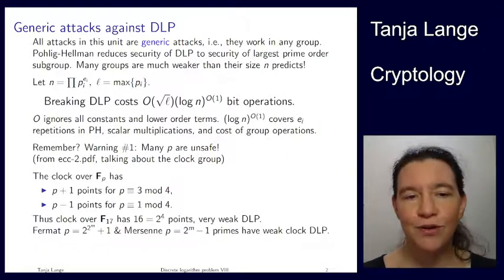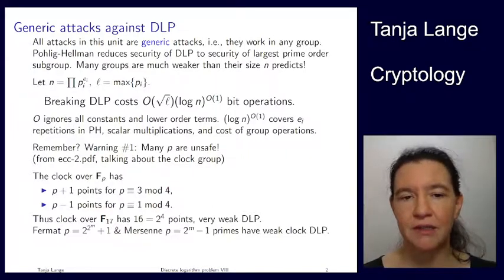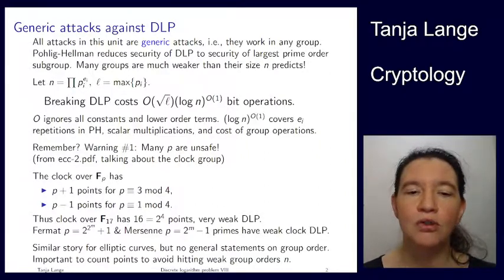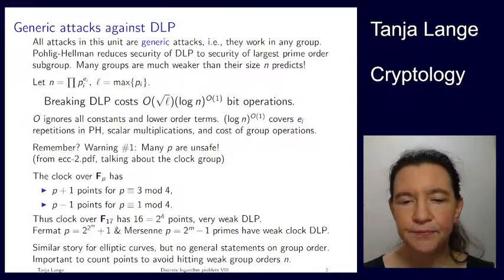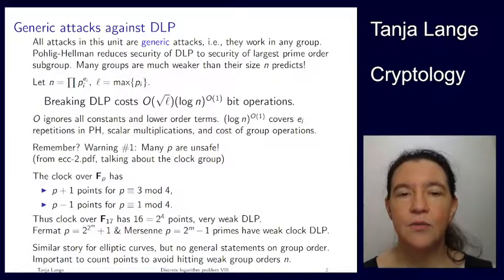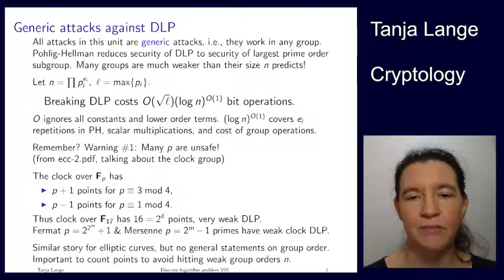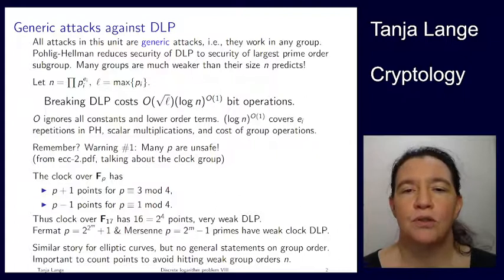There were also other warnings — for instance, that clocks are not elliptic curves — and we'll get later to what the difference is between elliptic curves and clocks in the hardness of the discrete log. But those are not generic attacks; here everything is generic. For elliptic curves I didn't tell you how to do point counting, and that also goes beyond what we can cover in this course. Point counting is relatively efficient — polynomial in log p, the logarithm of the size of the field. It's very important that for each elliptic curve you consider using, you actually count the number of points to make sure you don't hit a weak group order.